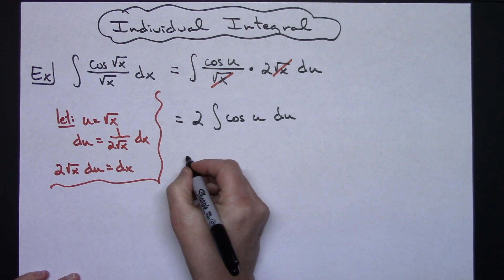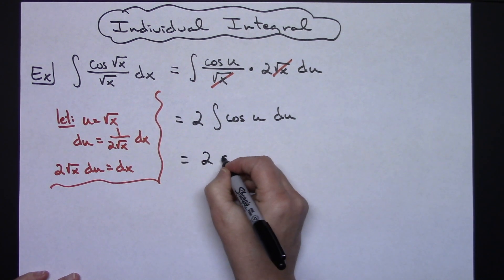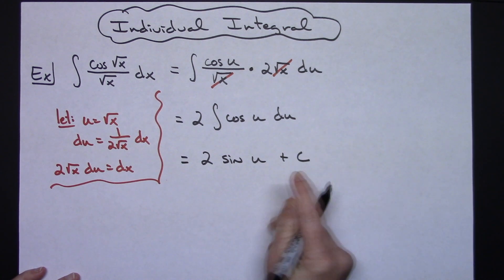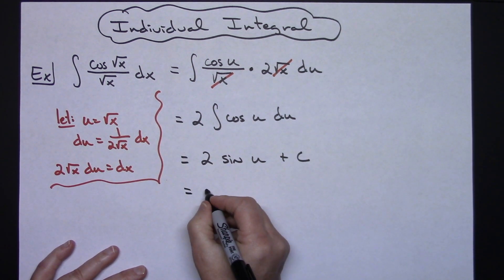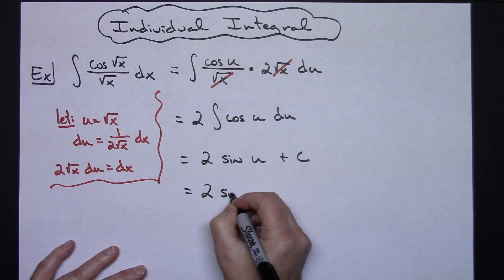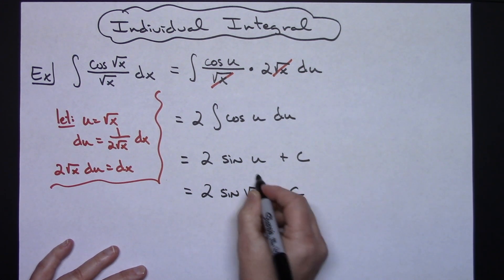So I'll have a 2 sine u plus C, and then replacing u with what is square root of x, we'll have a final answer of 2 sine square root of x plus C.